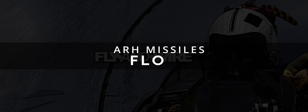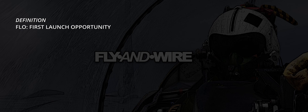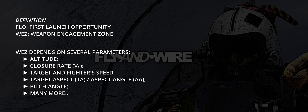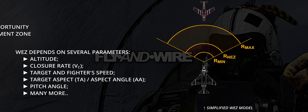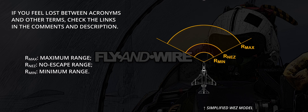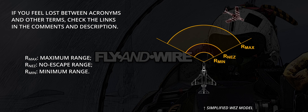The first launch opportunity, FLO, represents the start of the enemy's weapon engagement zone, WEZ. A missile's WEZ represents the combination of many parameters and suggests if such a weapon can hit our fighter jet. The WEZ is dynamic — its variables include altitude, closure rate, aspect angle, loft angle and many more. The simplest scenario to eyeball the FLO and the missile's general characteristics is a dead-ahead situation: zero target aspect and antenna train angle, TA and ATA respectively, or 180 aspect angle. The scenario can be complicated further if the target starts a cranking manoeuvre. I used these two situations in the first part of the study to get an overall idea of the performance of active radar homing missiles against altitude and geometry.